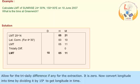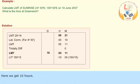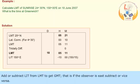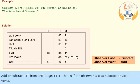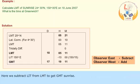Allow for tri-daily difference, if any, for the extraction — here, it is 0. Now convert longitude into time by dividing it by 15 degrees to get longitude in time. Here, we get 10 hours. Add or subtract LIT from LMT to get GMT. That is, if the observer is east, subtract, or vice versa. Here, we subtract LIT from LMT to get GMT sunrise.